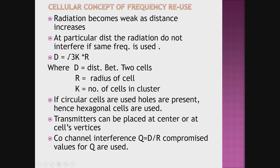The transmitter can be placed at the center of the cell or at the cell's vertices. The co-channel interference between cells is given by q = d / r, where d is the distance between two cells and r is the radius of the cell. Co-channel interference depends on both distance and radius of the cell, and a compromised value for co-channel interference q is used.